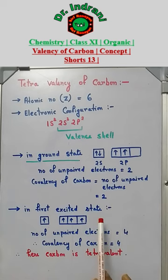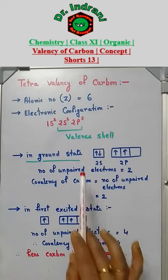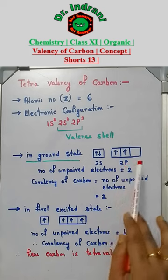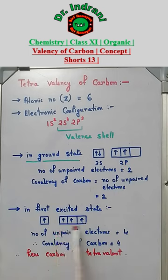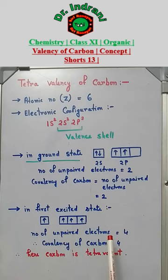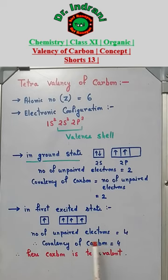In the first excited state, 1 electron will move from the 2s orbital to the 2p orbital. Valence shell electrons are distributed like this. Here, 4 orbitals with 1 electron each are available for covalent bond formation. Here, the number of unpaired electrons is equal to 4.